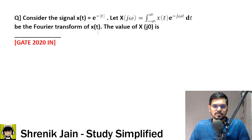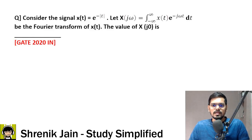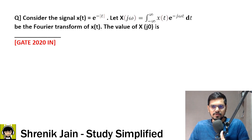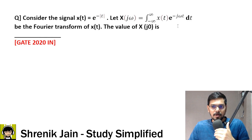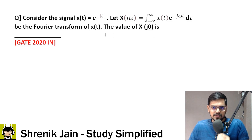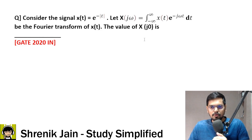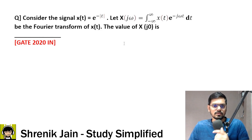Consider the signal x(t) equal to e to the power minus mod t. Let X(jω) equal to the integral from minus infinity to infinity of x(t) times e to the power minus jωt dt, be the Fourier transform of x(t). So the value of capital X(j0) is?